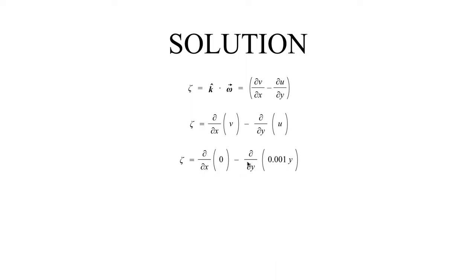So that's just 0, and the derivative of that is also 0. Then minus the partial derivative with respect to y of the zonal component, which is 0.001y. If we evaluate that derivative, we get zeta equals minus 0.001. The units for vorticity are per second, which is the same units as divergence and deformation.